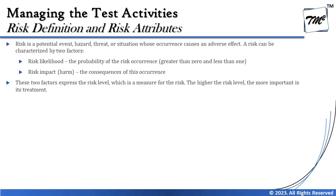Based on this analysis you will be able to determine the level of risk. These two factors — impact and likelihood — together express the risk level, which is a measure of the risk itself. The higher the risk level, the more important its treatment. If risk priority is high we do more testing there, and if risk level is low we proportionally do less testing, though we still address it.